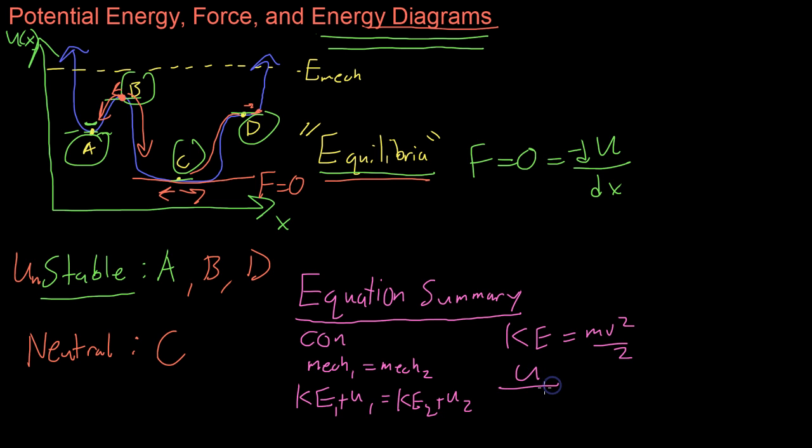There's various kinds of potential energy. The first of which we looked at was spring potential energy, kx squared over 2. There's also gravitational energy, mgh.